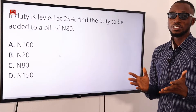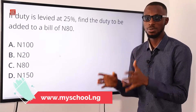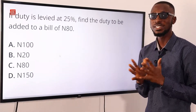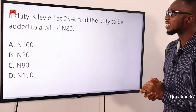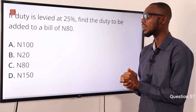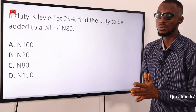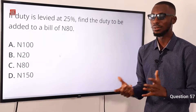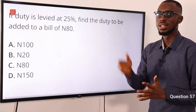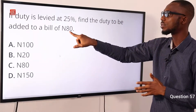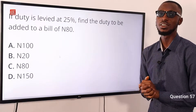You can ask your questions by clicking the link in the description below — the MySchool website has thousands of solution providers waiting to help. Question 57: if duty is levied at 25%, find the duty to be added to a bill of 18 Naira. That would be 25% of 18 Naira, which is 25 over 100 times 18 — giving us 4.5 Naira. Wait: 25 over 100 is 1 over 4. Looking at the calculation: 1 fourth of 80 is 20. Option B is the correct option.